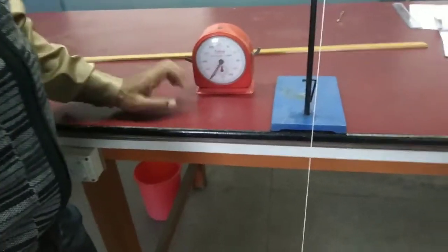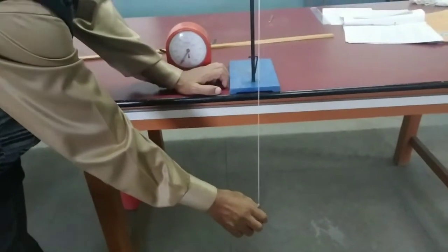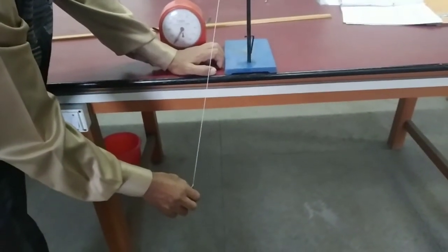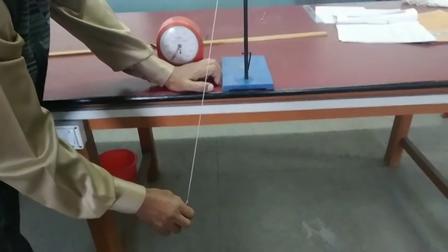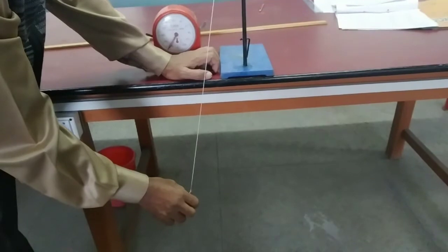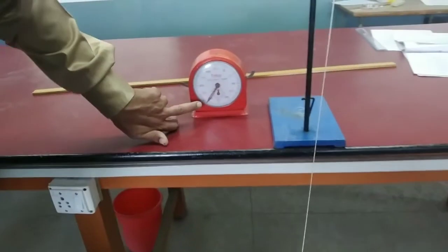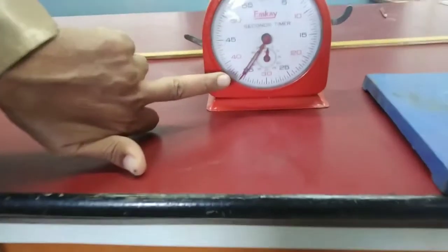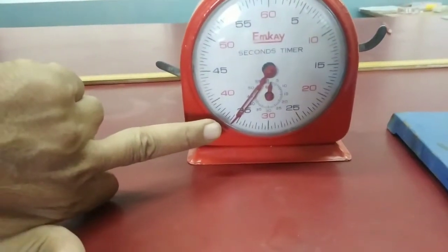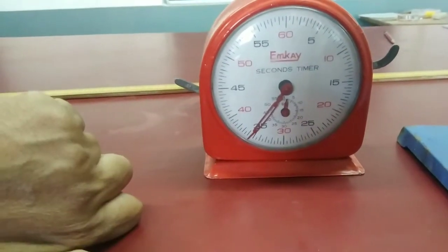We will see the time duration for 20 oscillations. And after doing 20 oscillations we have noticed it takes for 20 oscillations 36 seconds. So here time period will be 36 divided by 20.